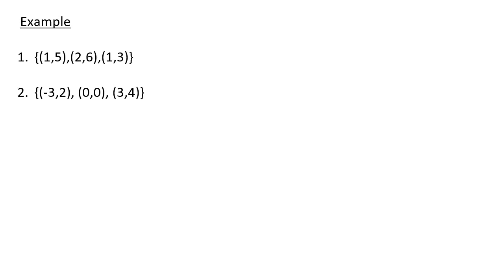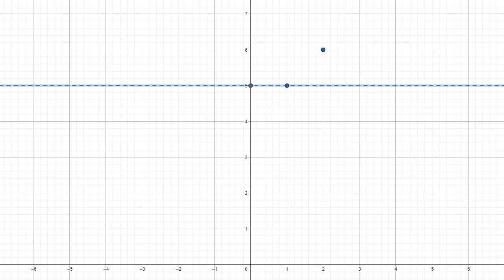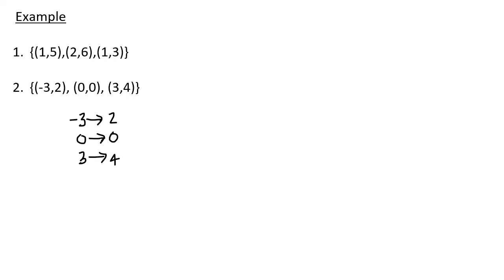Consider this example. In the first example, I have the set of three ordered pairs: (1, 5), (2, 6), and (1, 3). This is not a one-to-one function because 1 is associated with both 5 and 3. Even if I graph these three points, I can see the line y = 5 intersects them in more than one place. If I consider the set of points (−3, 2), (0, 0), and (3, 4), each x is associated with only one y — this is a one-to-one function, and it passes the horizontal line test.